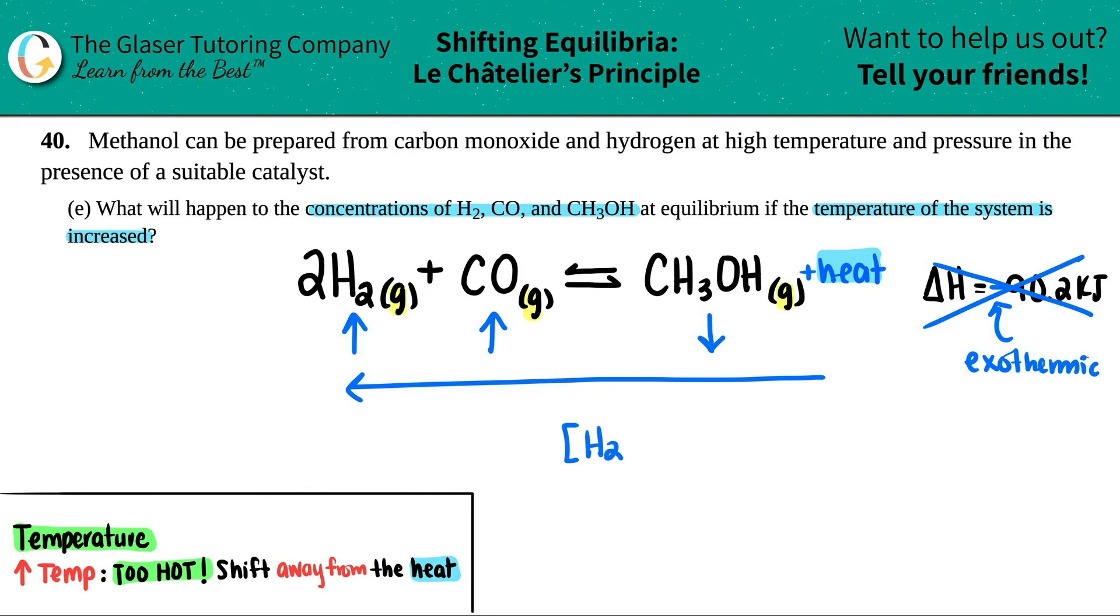So the concentration of H₂ will increase, the concentration of CO will increase, and then the concentration of the methanol will decrease. And oopsie, did you catch it? This should have been an increase. There you go.